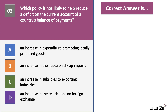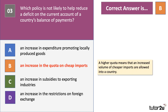Question three: which policy is NOT likely to help reduce a deficit on the current account? We're looking for the odd one out — three of these would likely reduce the deficit. The odd one out is B — an increase in the quota. A quota is a limit on the volume or quantity of imports allowed into a country, and an increase means a greater volume of cheaper imports is allowed in, which is likely to worsen and increase the deficit on the current account.